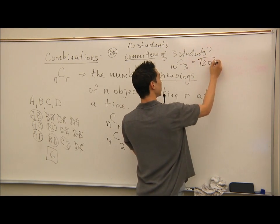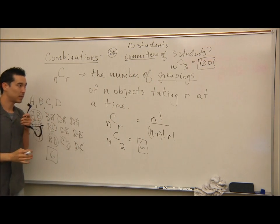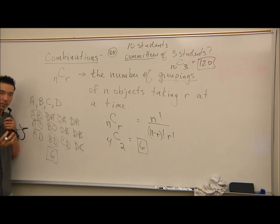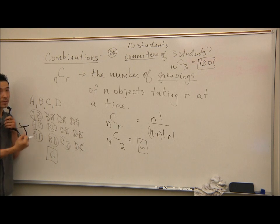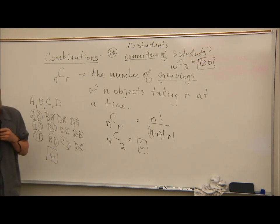It can get confusing determining whether something is a permutation or combination. Ask yourself: does every different arrangement matter? If order doesn't matter and it's just a group or collection, it's a combination. If every order or arrangement is different and does matter, it's a permutation.